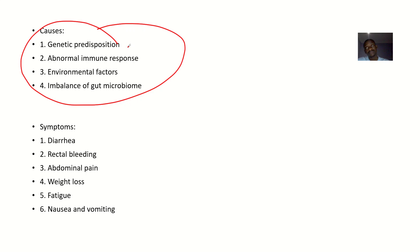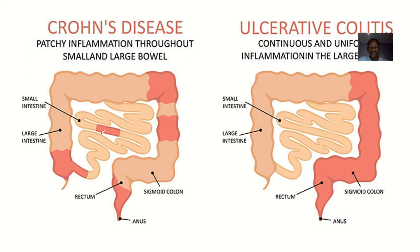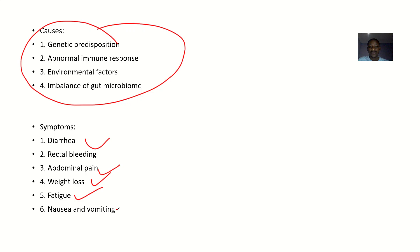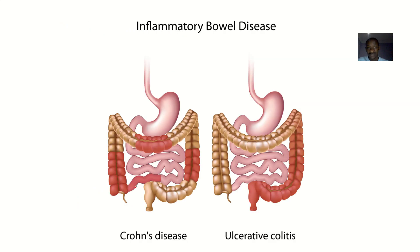If the population and activity of those microorganisms gets too much, then basically you have an inflammation causing a disease condition. Symptoms: a patient that has a problem in the bowel will complain about diarrhea — passing out watery stool. They'll complain about rectal bleeding, blood in stool, abdominal pain, weight loss, fatigue, and nausea and vomiting.